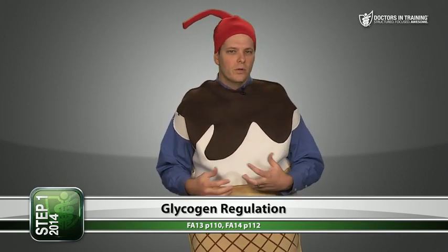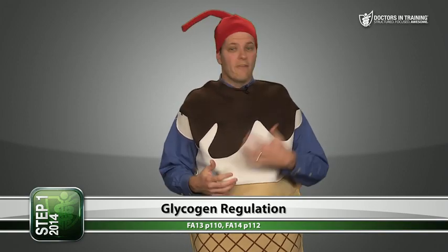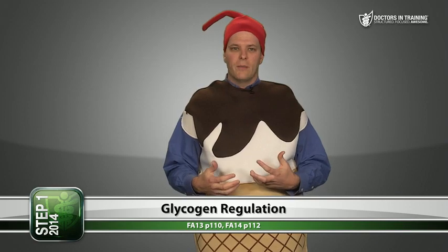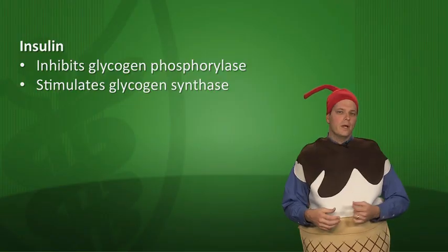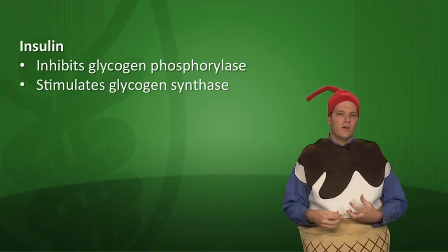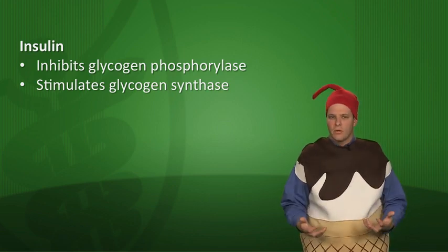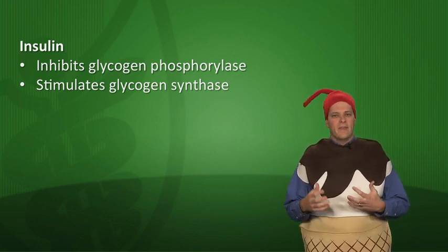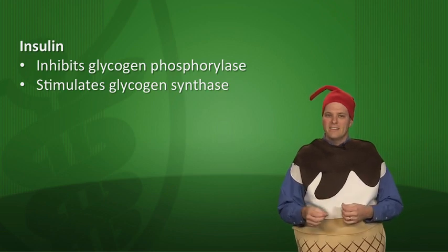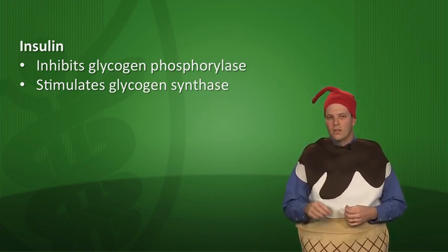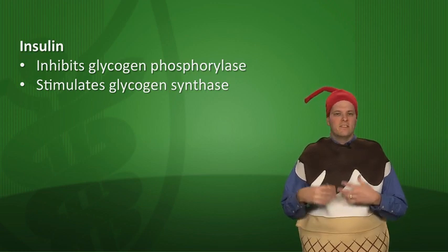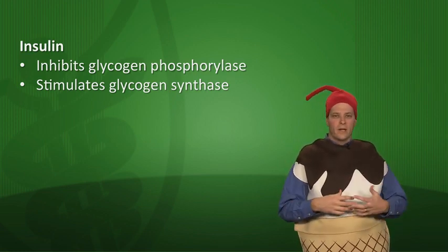Now let's talk about the regulation of glycogenolysis. You don't want to break down glycogen when there's already lots of glucose in circulation after a meal, and you don't want to make glycogen during times when you need glucose for energy. Insulin inhibits glycogen phosphorylase and stimulates glycogen synthase. So after eating, insulin allows glucose into cells, inactivates glycogen phosphorylase, and stimulates glycogen synthase — storing whatever extra glucose you don't need right then.